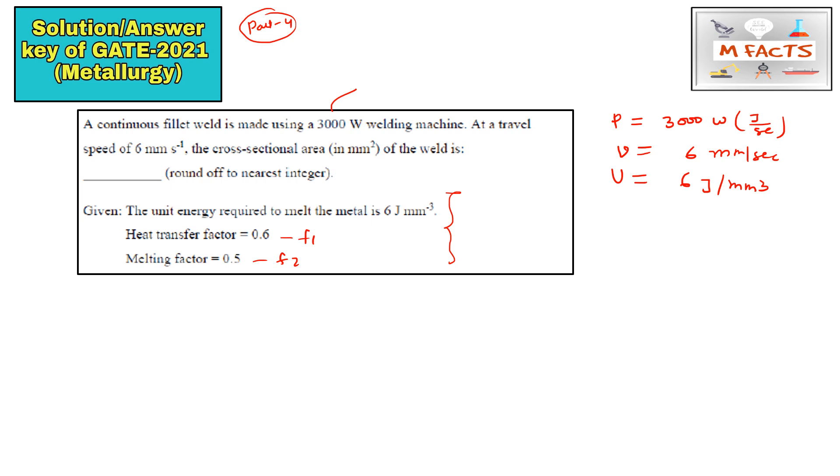For this type of question you need to apply the formula. So the formula is f1 times f2 times power source p equals u multiplied by area of weld times v.